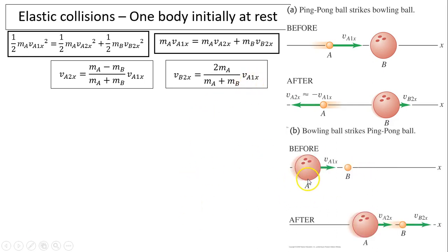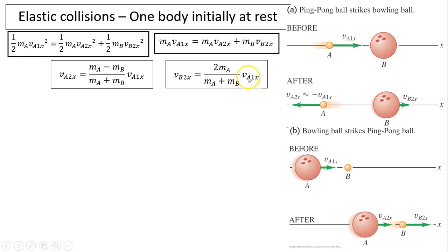Another case: what if the ping pong ball was at rest and the bowling ball was moving? In this case, MA is so much bigger than MB, so MA minus MB divided by MA plus MB is almost positive 1. That means the bowling ball's speed is almost the same — just slightly smaller than before. The ping pong ball's speed is almost 2 times the bowling ball's original speed.